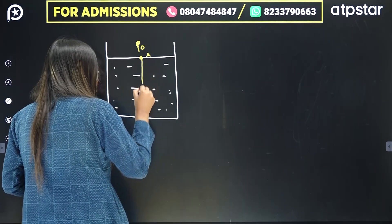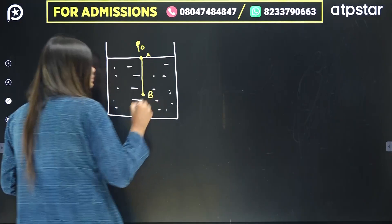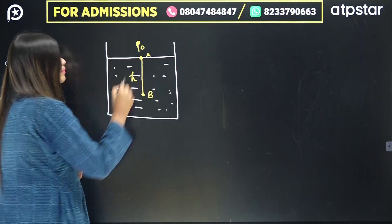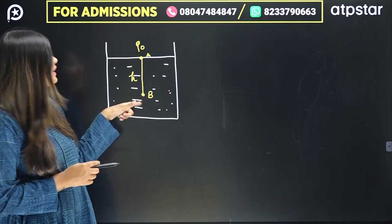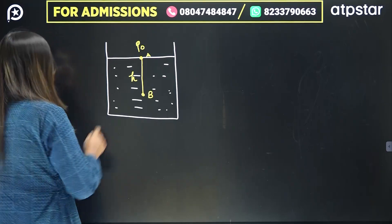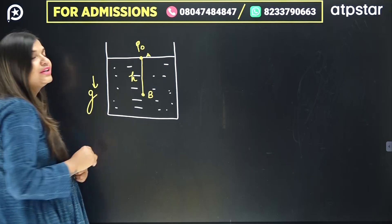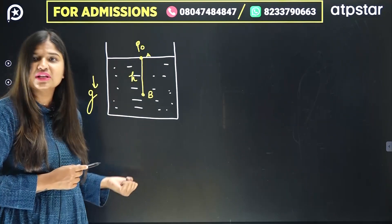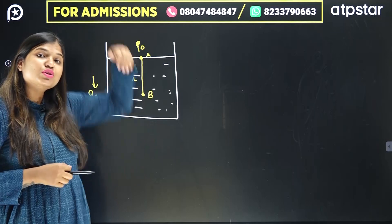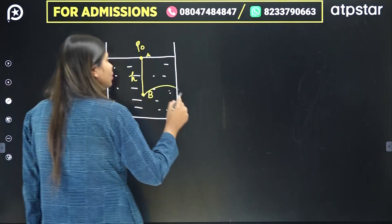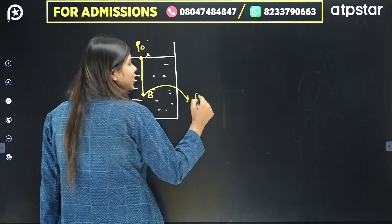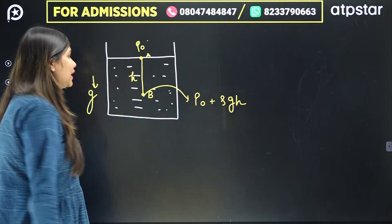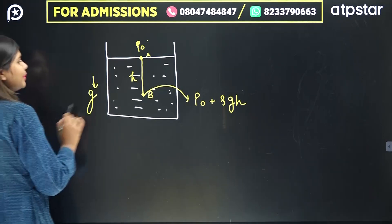Now we go H height below this point. How much pressure is on this point? When we go vertically downward, the gravitational acceleration acts, so the force is Mg. As we go down, pressure increases. The pressure at height H below is P0 plus ρgH.